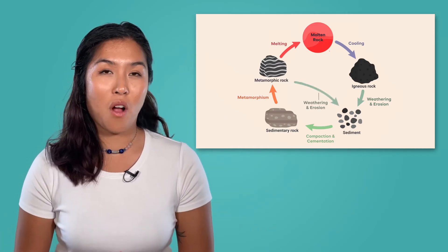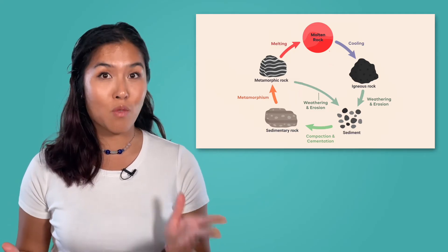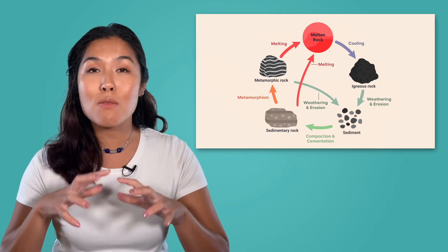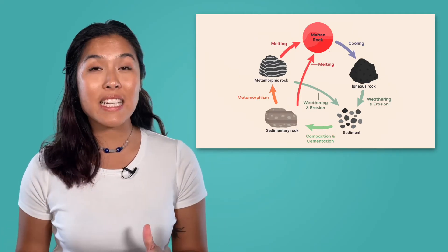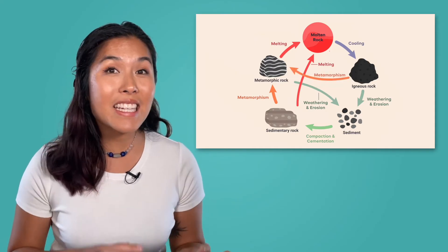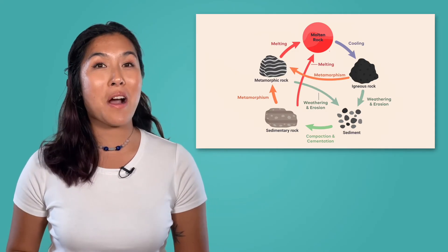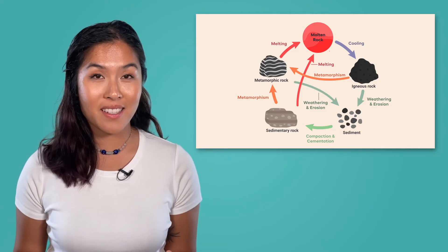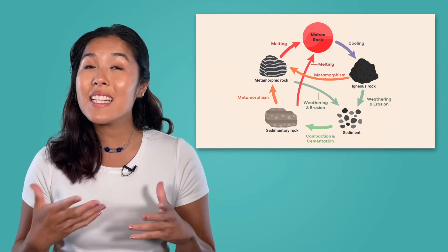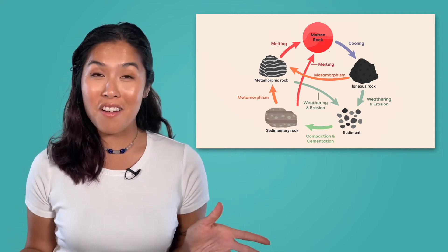Any kind of rock can be broken down into sediments by weathering and erosion. Any kind of rock can melt into molten rock and harden into an igneous rock. And any kind of rock can undergo metamorphism and become a metamorphic rock. That means rocks can even repeatedly change into the same kind of rock that they already are.